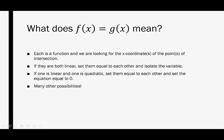What does f of x equal g of x actually mean? Well, each is a function, and we are looking for the x-coordinate or coordinates of the point or points of intersection. If they are linear, set them equal to each other and isolate the variable. If one is linear and one is quadratic, set them equal to each other and then set the equation to zero. I could go on with all these different strategies, but really it just comes down to what types of functions we're given to see what strategy we actually want to use.